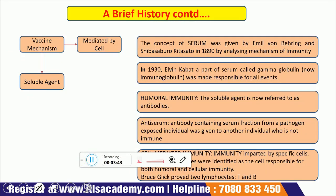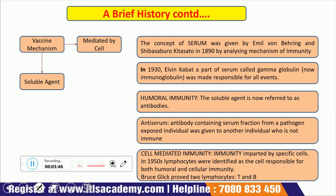By this time the concept of vaccine had been introduced, but the mechanism by which the vaccine worked was not clear. Some scientists said it was mediated by a cell and some said there was a soluble agent playing a role. Emil von Behring and Shibasaburo Kitasato in 1890 coined the term serum by analyzing the mechanism of immunity. In 1930, Alvin Kabat identified a part of serum called gamma globulin — now known as immunoglobulin — as responsible for all these events.